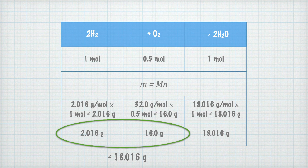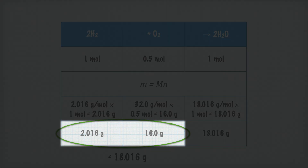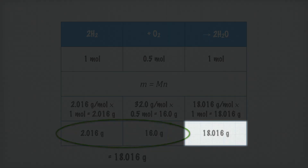The mass of the reactants equals 18.016 grams — exactly as much as the mass of the product, water. That's what we mean by conservation of mass: the mass in a chemical reaction is conserved, meaning the mass of the reactants is always equal to the mass of the products.